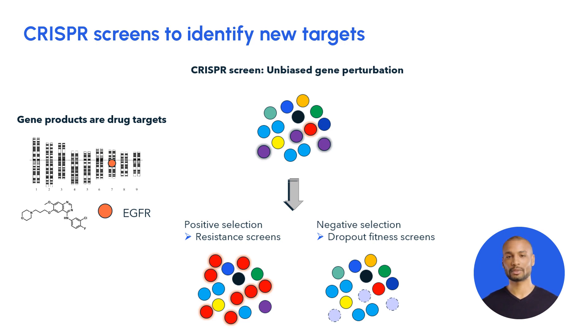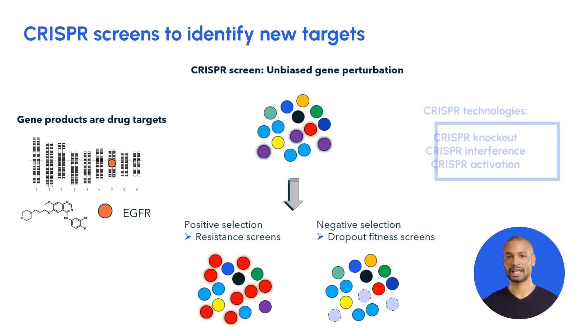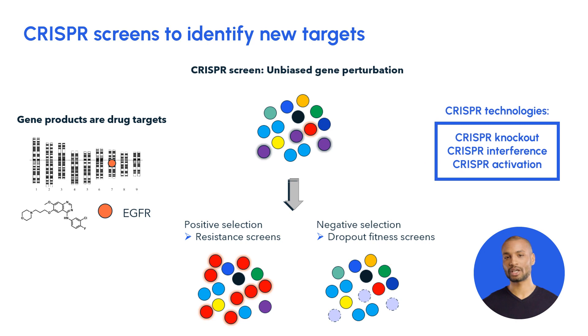There are three types of CRISPR applications: knockout, interference, and activation. Let's have a look at CRISPR knockouts in more detail.